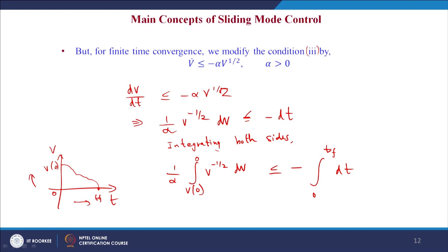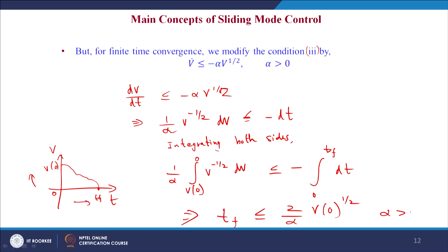The initial value of V is V(0) and the final value is 0. t varies from 0 to tₓ. After simplifying this integration, tₓ ≤ (2/α)·V(0)^(1/2), where α > 0.